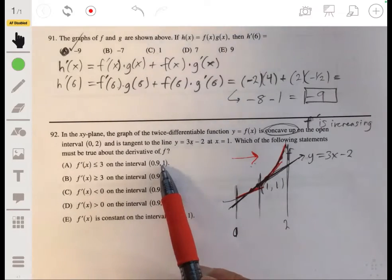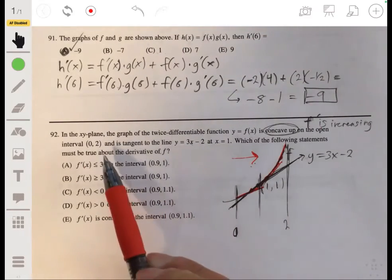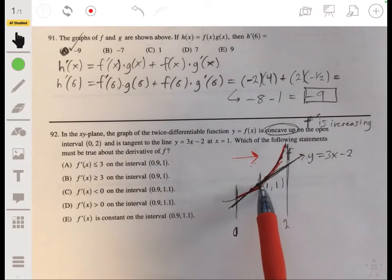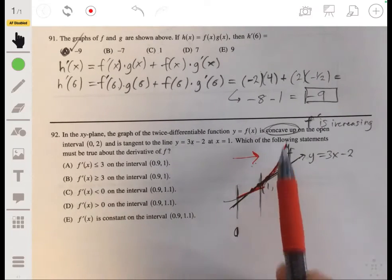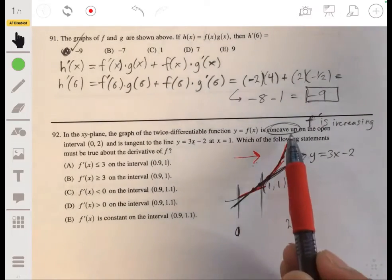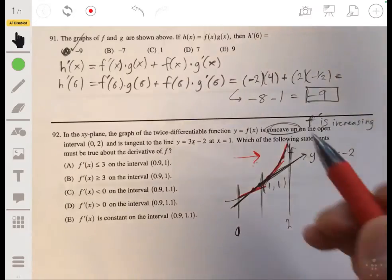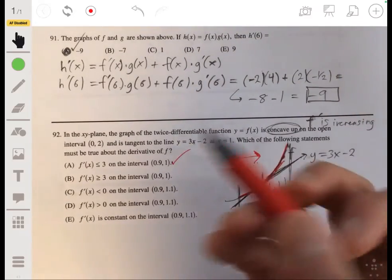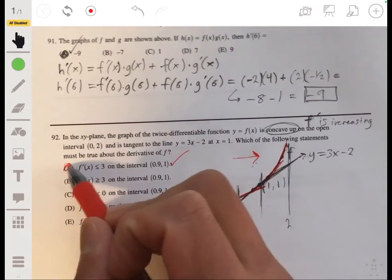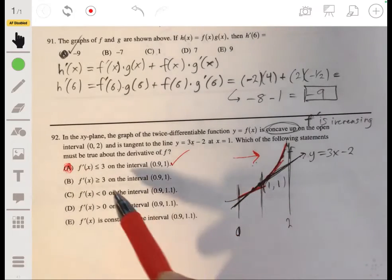That would be true, because as long as it's not more than 3, this holds. That means that it's not going to violate this concept. So a would be okay. I mean, the answer would be a. And let me just go over the other one just in case I need some clarity.